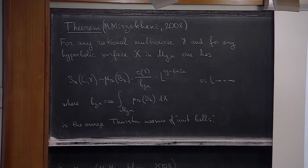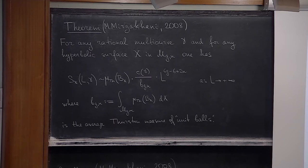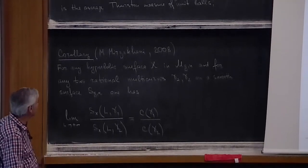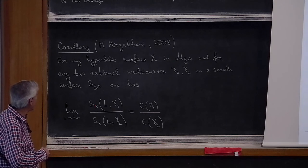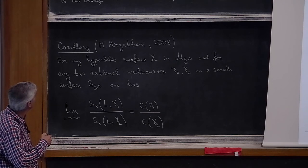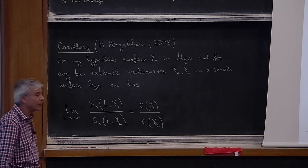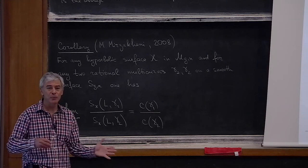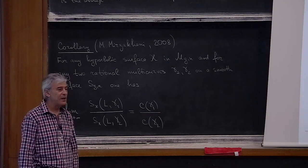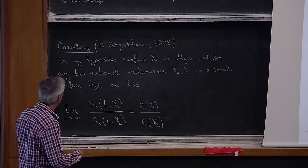This theorem has an immediate corollary. If you take two different topological types — for example, if you're interested in counting separately separating and non-separating simple closed geodesics — then asymptotically there are frequencies of simple closed geodesics of type gamma_1 and of type gamma_2. The ratio of these quantities, showing how frequently we see one with respect to another, does not depend on the hyperbolic metric. When we divide by the similar quantity with gamma_1 replaced by gamma_2, only this coefficient survives. The ratio depends only on topology; geometry disappears. For any hyperbolic surface, the frequencies are the same, given that we fix genus and number of punctures.